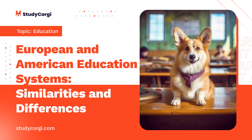A focus on the United Kingdom education system shows that the country offers practical elements of education. On the other hand, the United States promotes liberal arts education. The United States education system introduces students to broad aspects of the curriculum. Conversely, the United Kingdom education system is ideal for learners who have chosen their career paths. This approach enables learners to concentrate on their areas of specialization throughout their study period. Learners can also conduct research in areas of their interests.